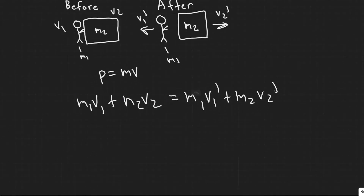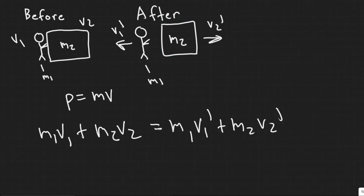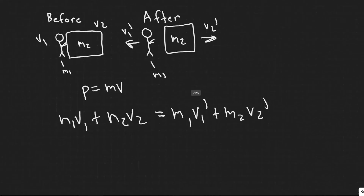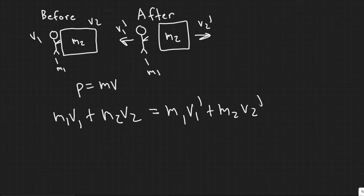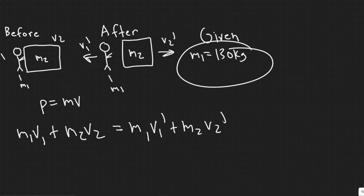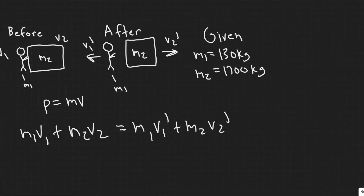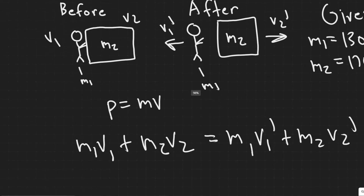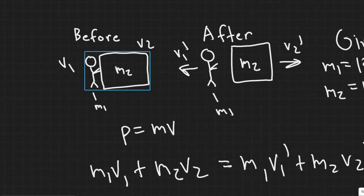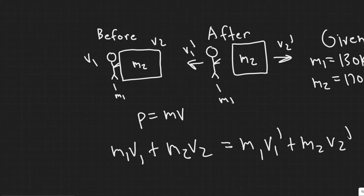Now that we know this system, we need to solve for V2 prime, which is the velocity of our space capsule. We know M1 is 130 kg and M2 is 1,700 kg. Before the push, the astronaut is not moving, so V1 is 0, and the space capsule isn't moving either, so V2 is 0. Since anything multiplied by 0 is just 0, both terms on the left go away.